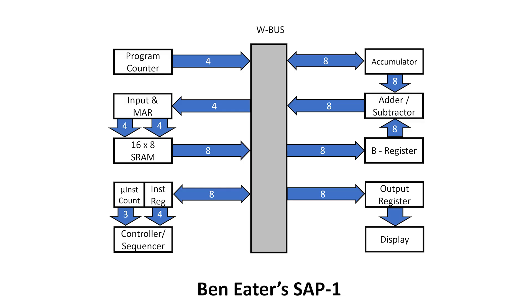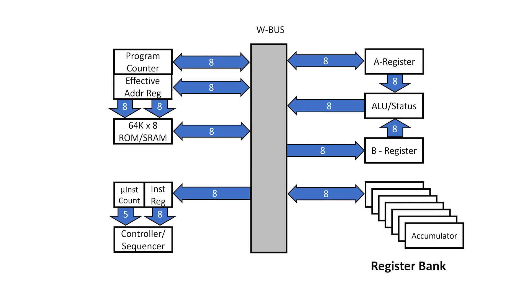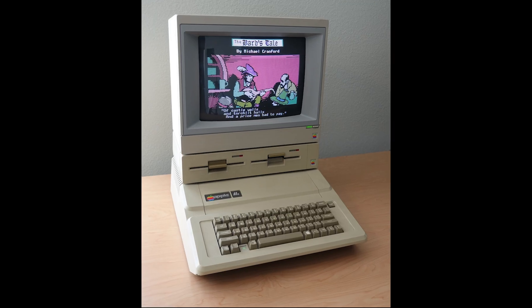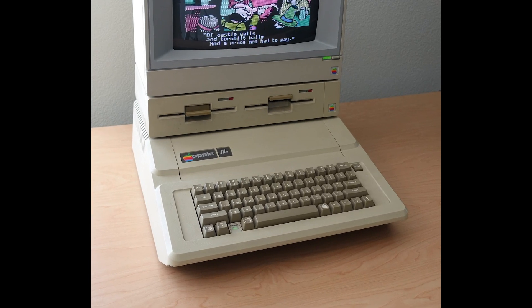Now, the SAP-1 is a great learning tool, but it doesn't really do much. It only has 16 bytes of RAM. I wanted to show in this series that with some modifications, we could make it execute 6502 machine code and potentially tap into the huge software library for the Apple II computer.